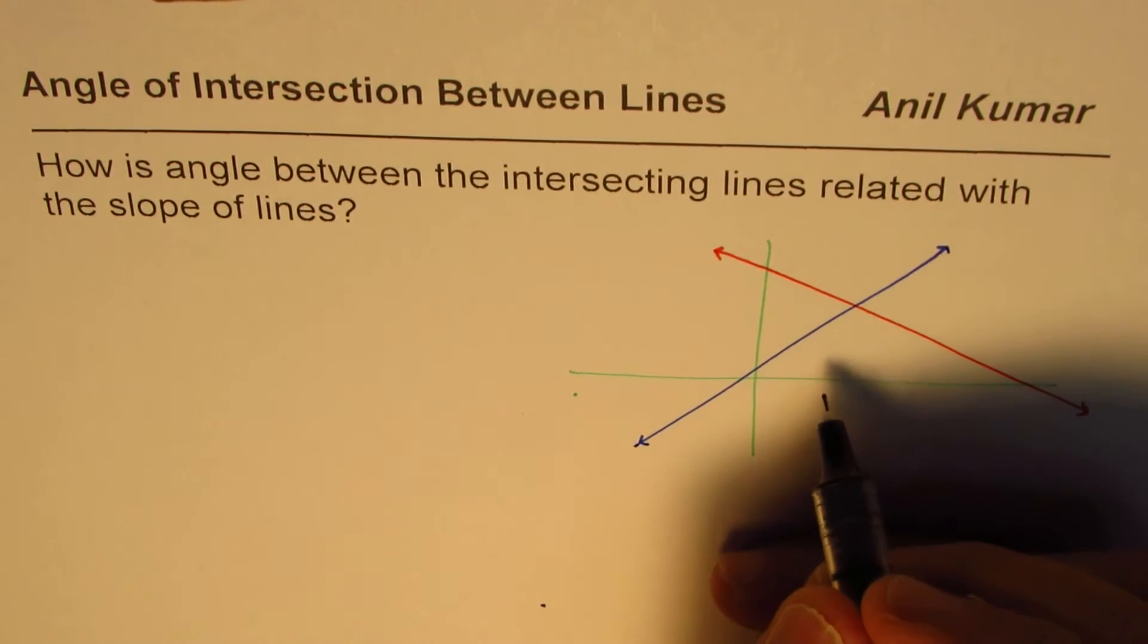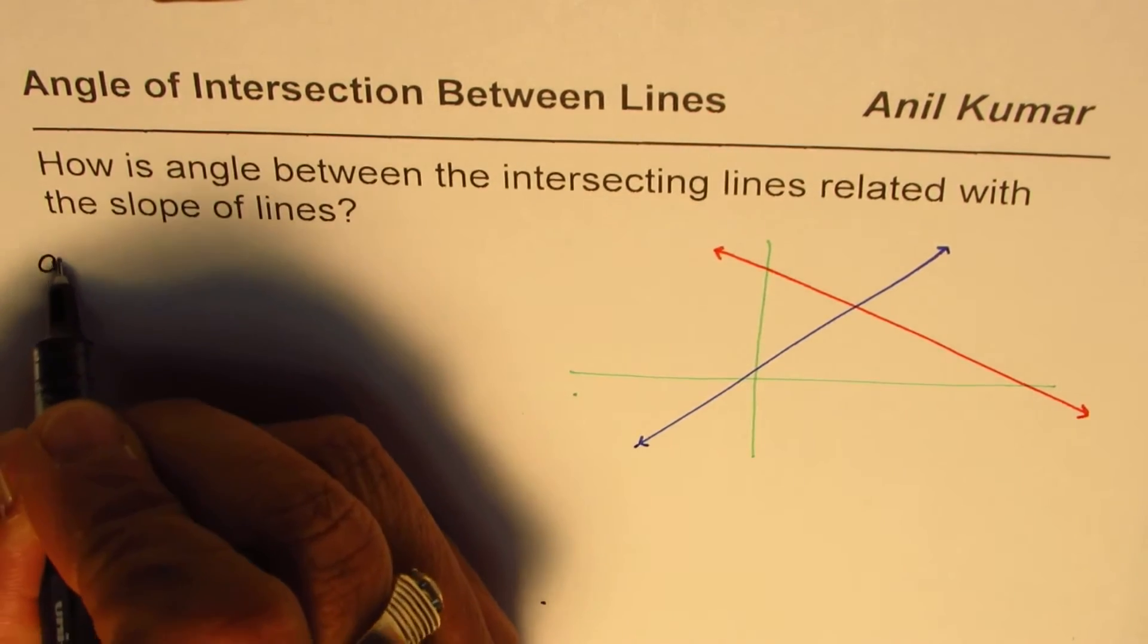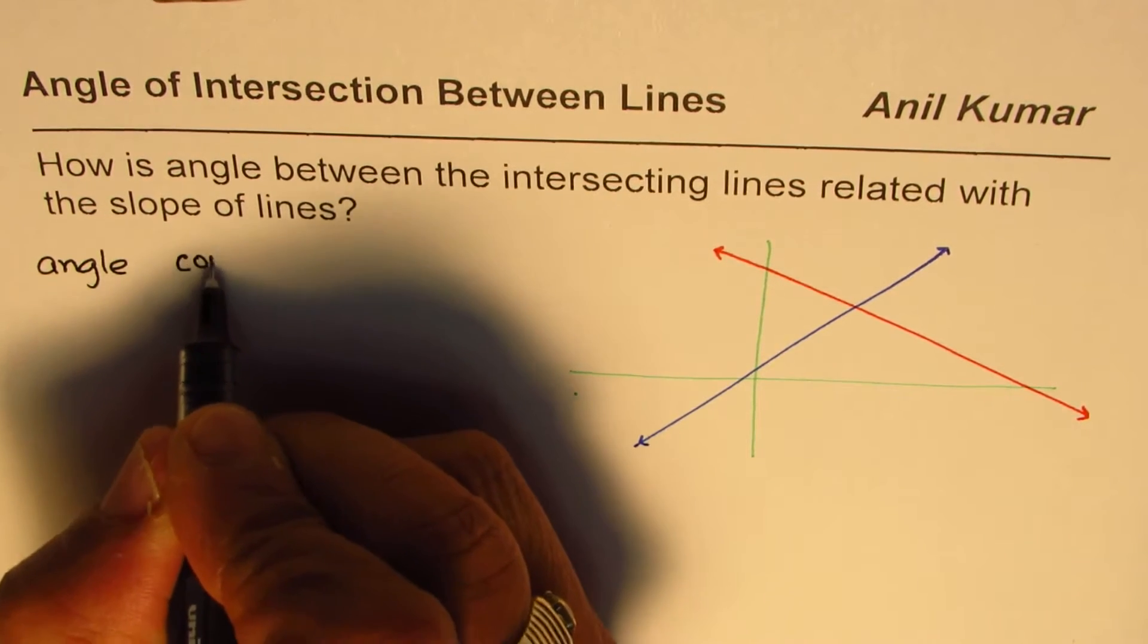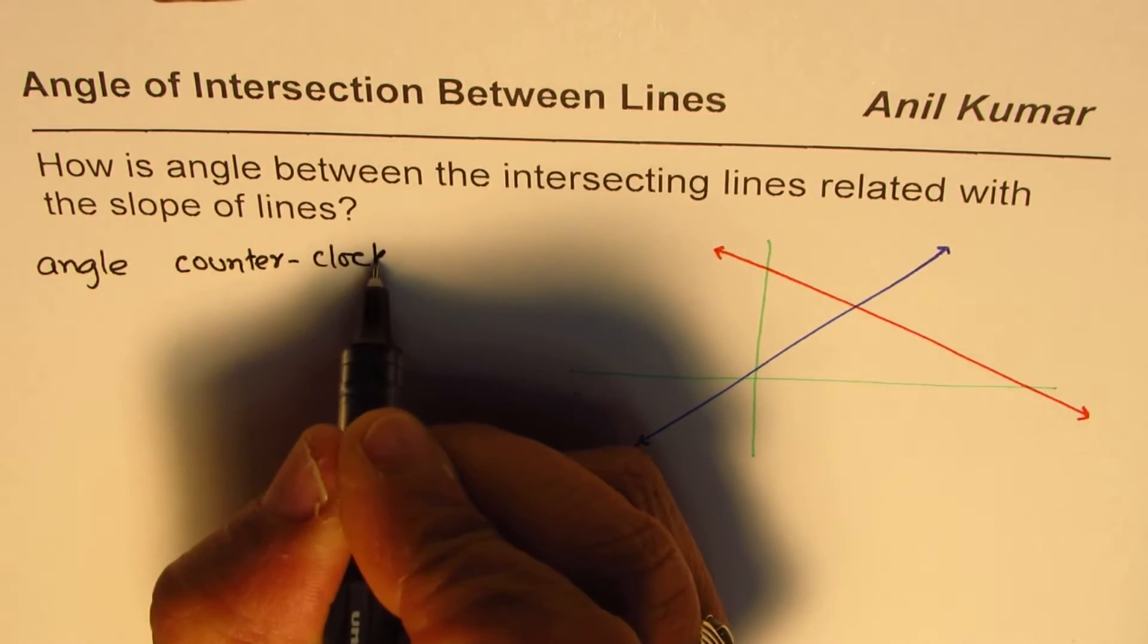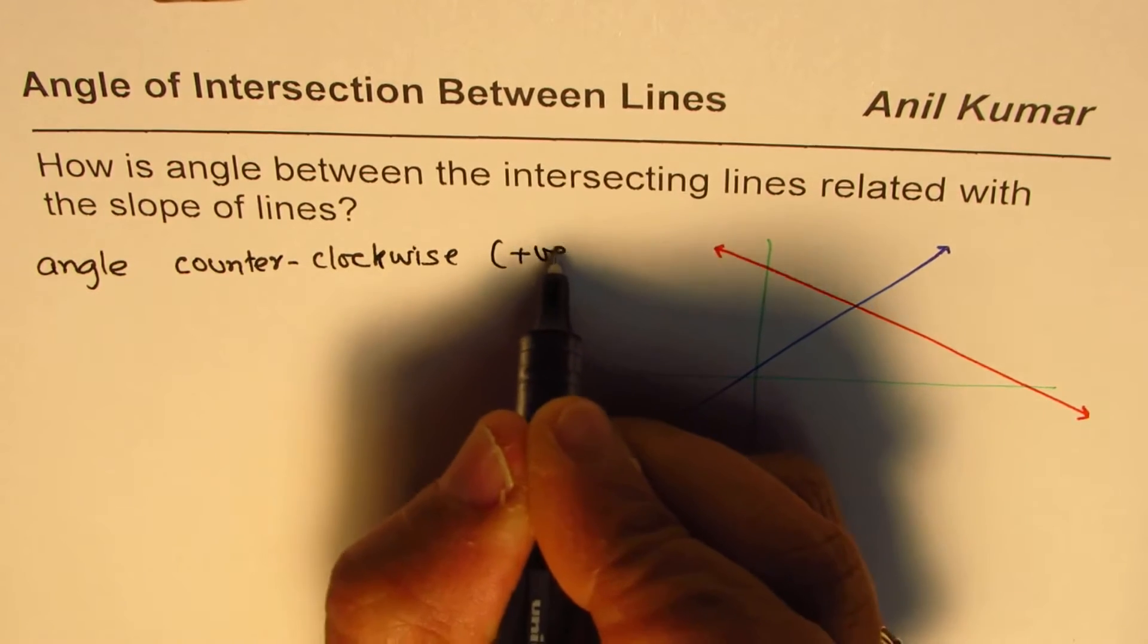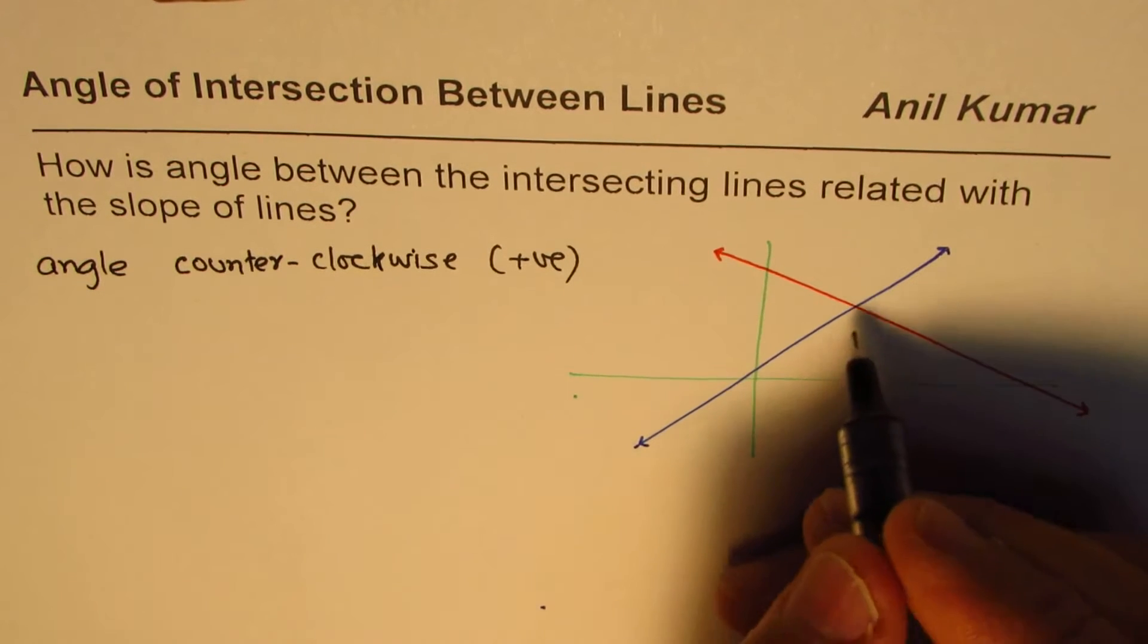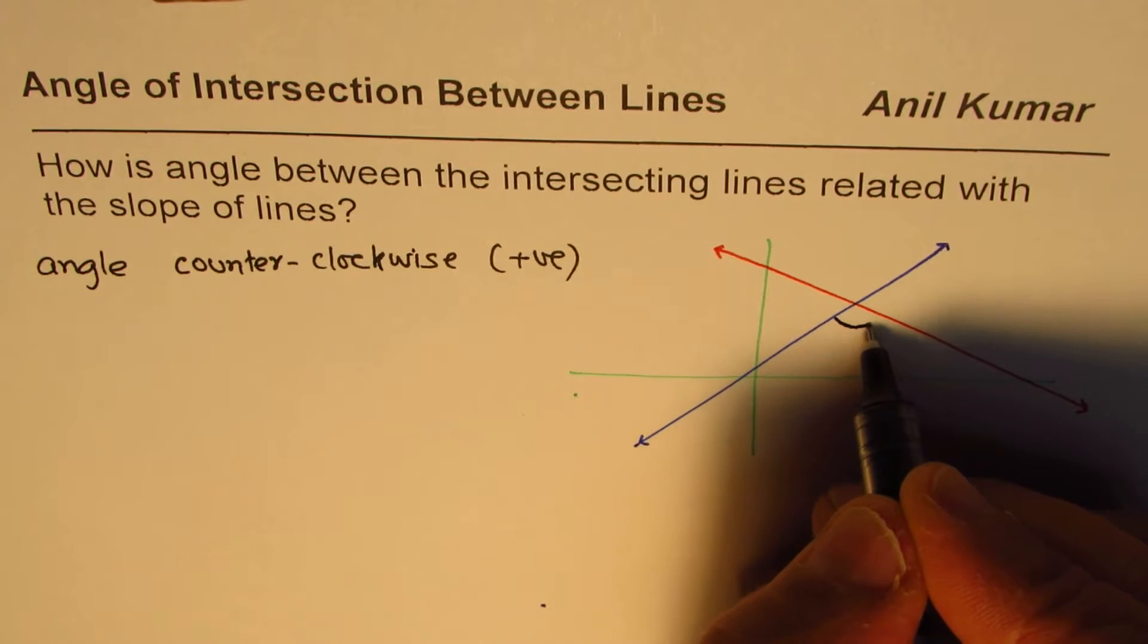Now whenever we say angle of intersection angles should be measured counterclockwise, because then they are treated as positive. So we will always see the angles as counterclockwise between the lines. Let us say these are the two lines then the angle could be from here to there.